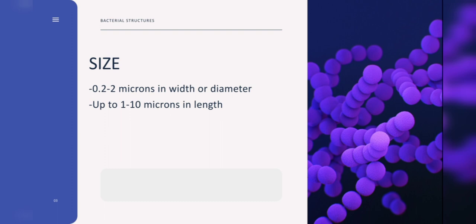Next is the bacterial size. Bacterial cells are much smaller than human cells. Bacterial cells can measure from about 0.2 to 2 microns in width or diameter, and up to 1 to 10 microns in length. So, 1 micrometer is 1,000 times smaller than a millimeter. That is very tiny. It's much smaller than the human red blood cell, which is, on average, about 7 micrometers in diameter.